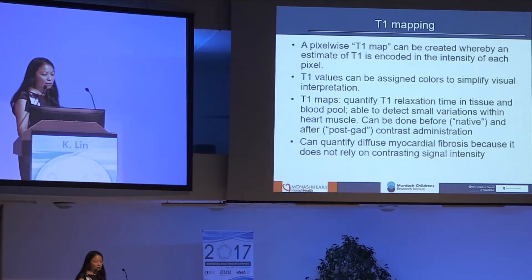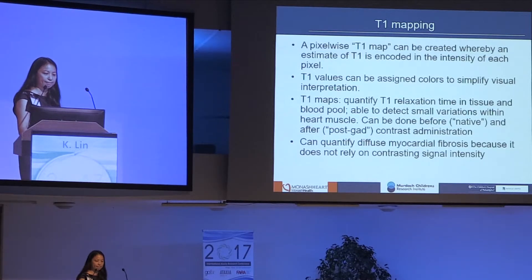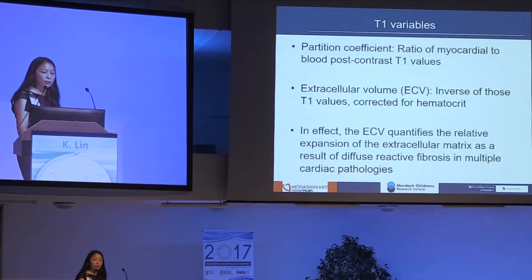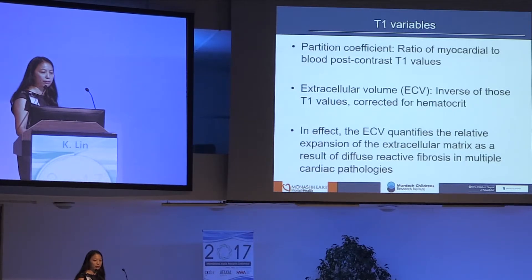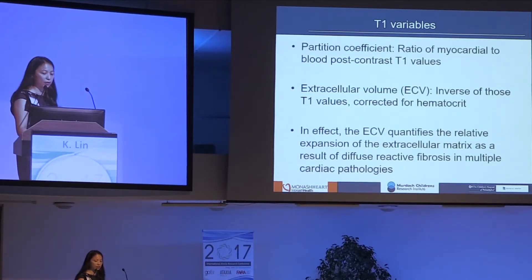You can detect small variations within the heart muscle both before and after contrast administration, and quantify diffuse myocardial fibrosis using this technique because it doesn't rely on contrasting signal intensity as does late gadolinium enhancement. Variables examined include the partition coefficient — a ratio of myocardial to blood pool post-contrast T1 values — and the extracellular volume (ECV), which is the inverse of those T1 values corrected for hematocrit. The ECV quantifies the relative expansion of the extracellular matrix as a result of diffuse reactive fibrosis in multiple cardiac pathologies.